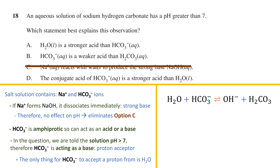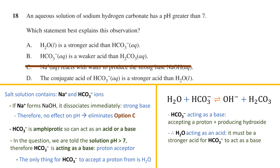The equation shows water donating a hydrogen ion to the hydrogen carbonate, forming carbonic acid and leaving behind a hydroxide ion. The hydrogen carbonate is the base; the water is the acid donating the proton. Therefore, in the presence of the hydrogen carbonate ion, the water must be the stronger acid. If this were not the case, the proton would go in the other direction, since both water and hydrogen carbonate are amphiprotic. Because water is the stronger acid, option A is our answer.